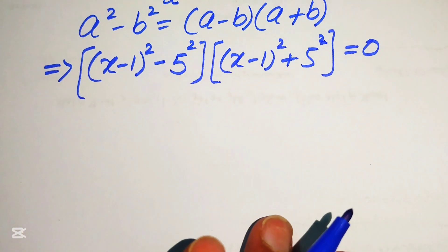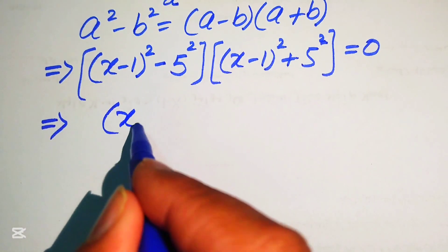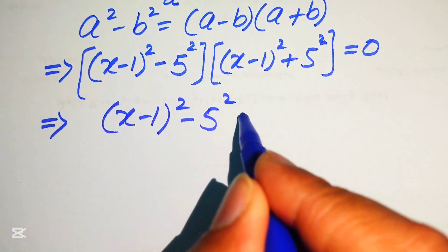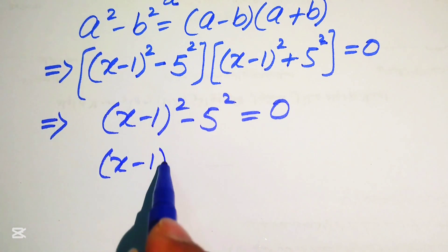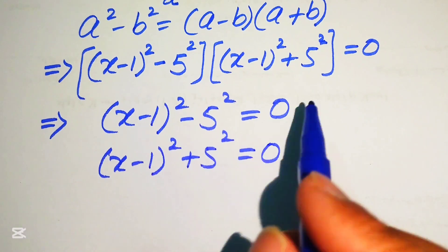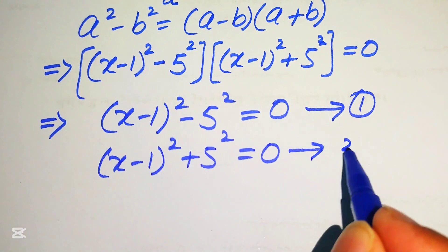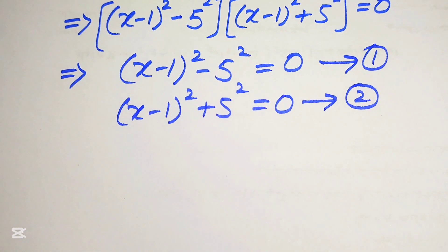In the next step we divide this equation into two cases. Case 1 (Equation 1): (x minus 1)² minus 5² equals 0. Case 2 (Equation 2): (x minus 1)² plus 5² equals 0. We will solve these two equations to get all four roots.